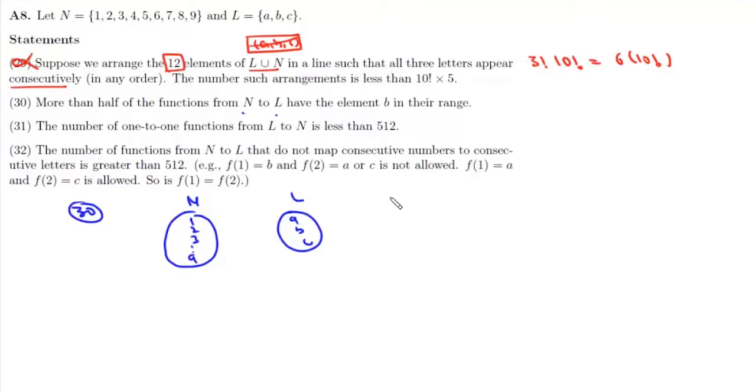Now if we find total number of functions, then total number of functions from N to L will be: for each element we have three choices. So for all the nine elements we have 3 × 3 × 3, 9 times.